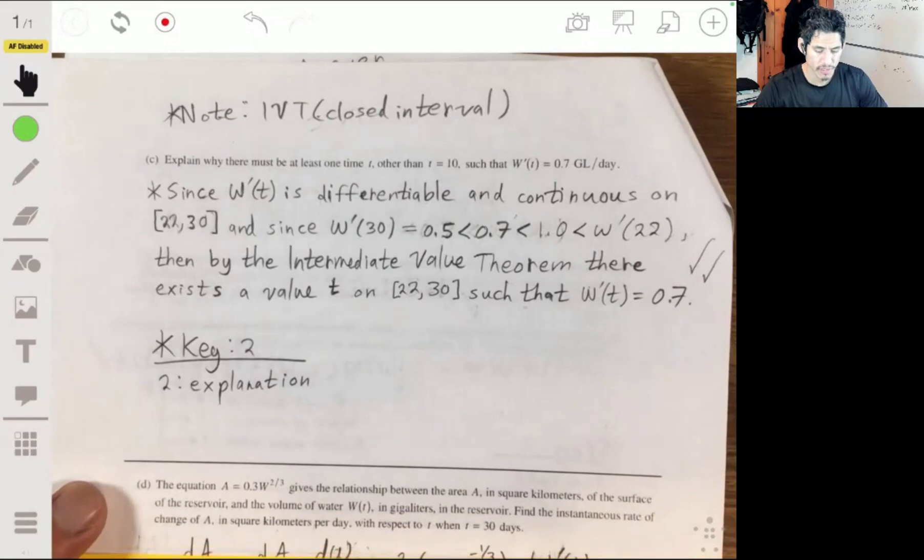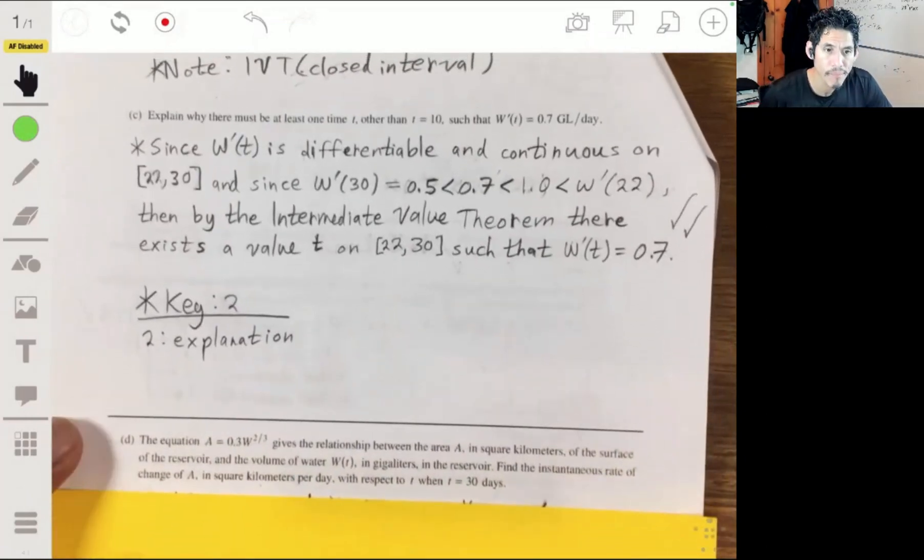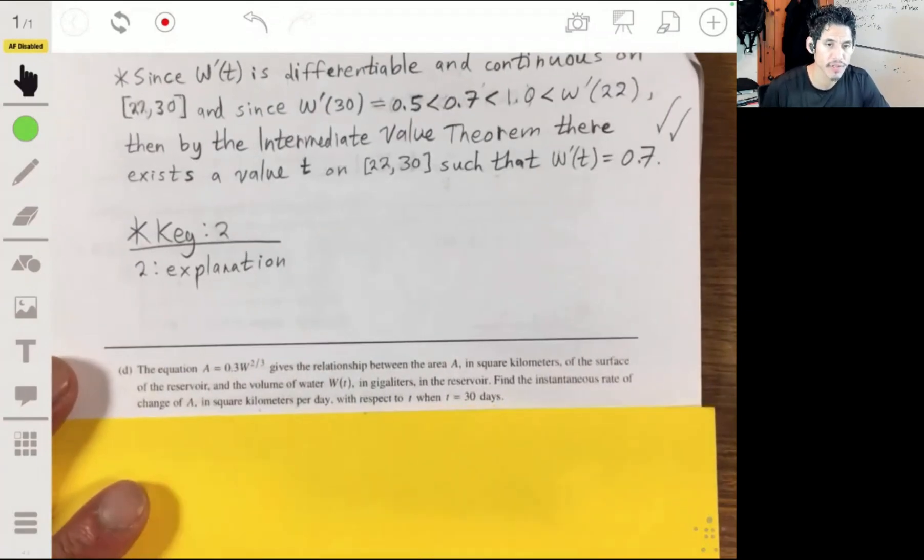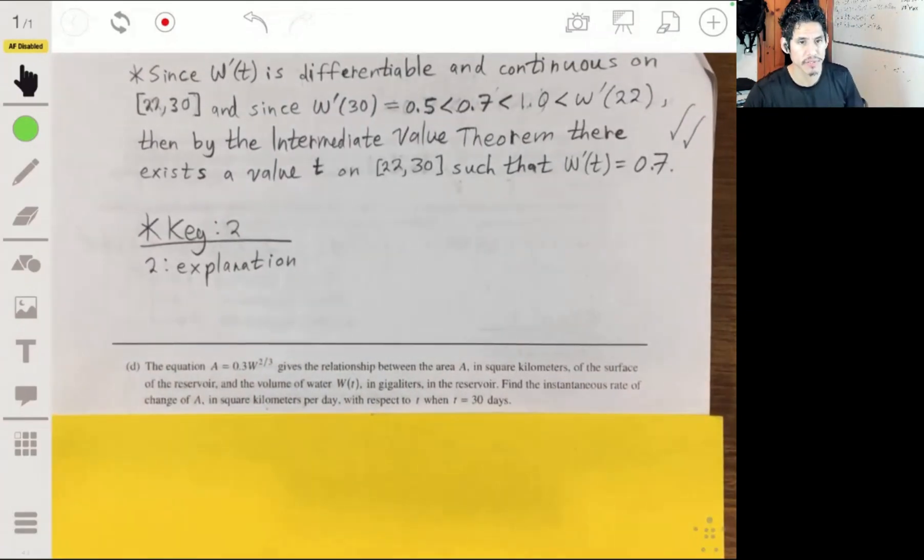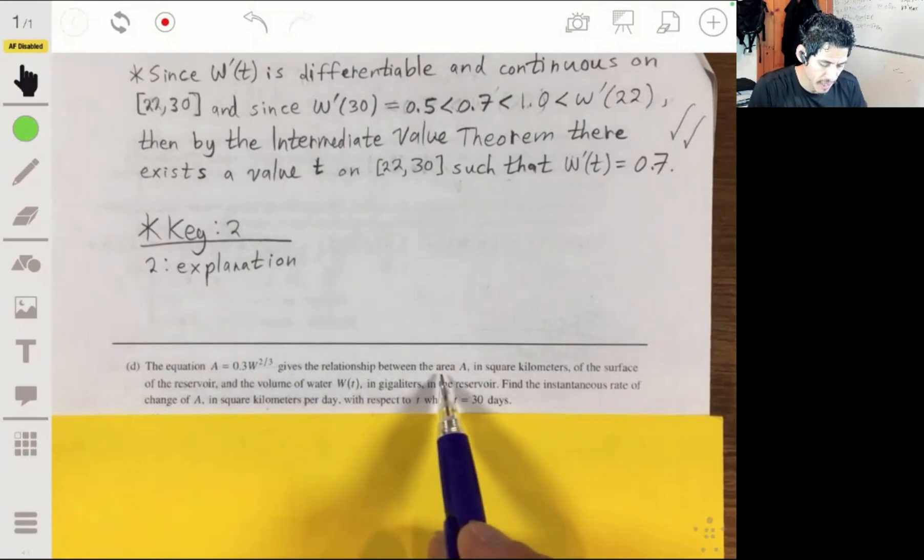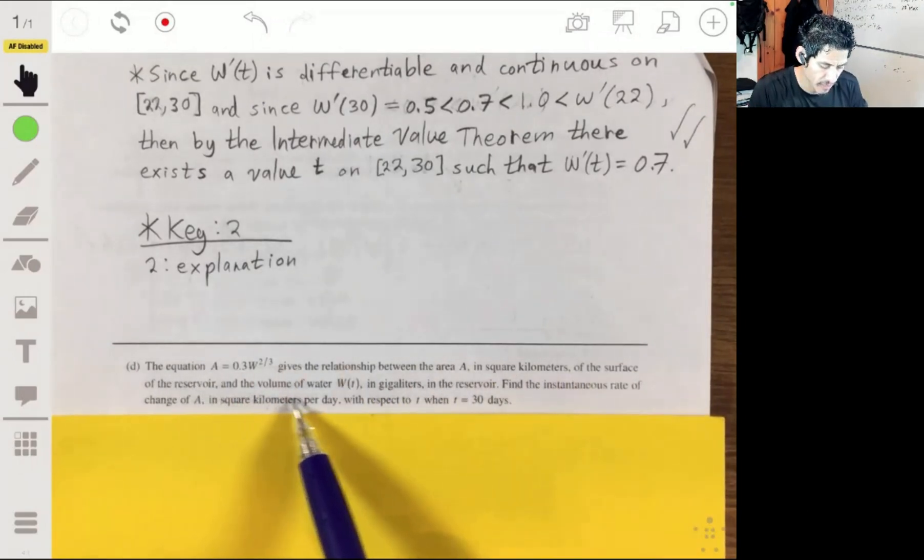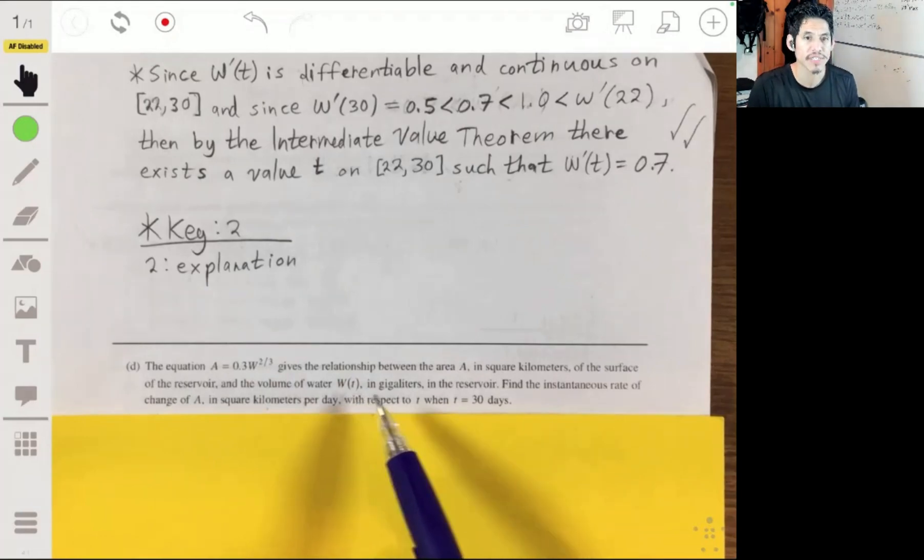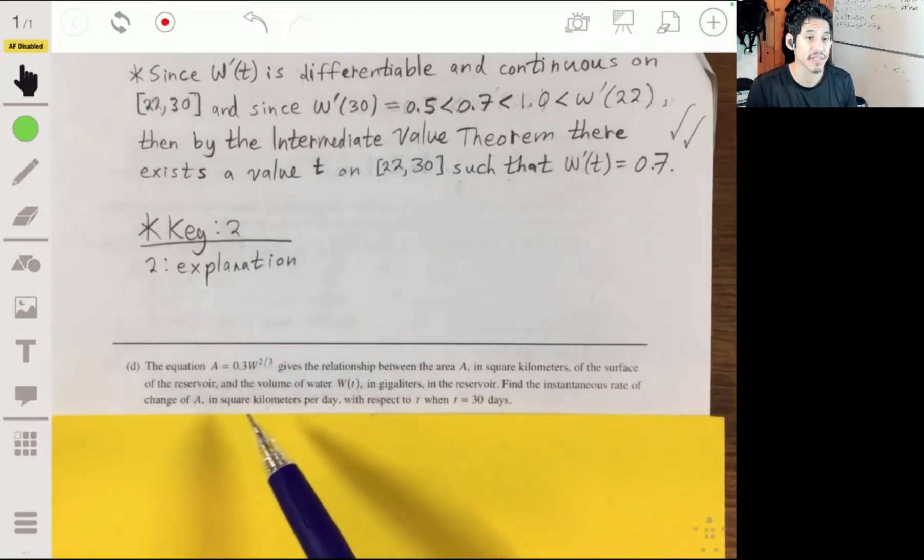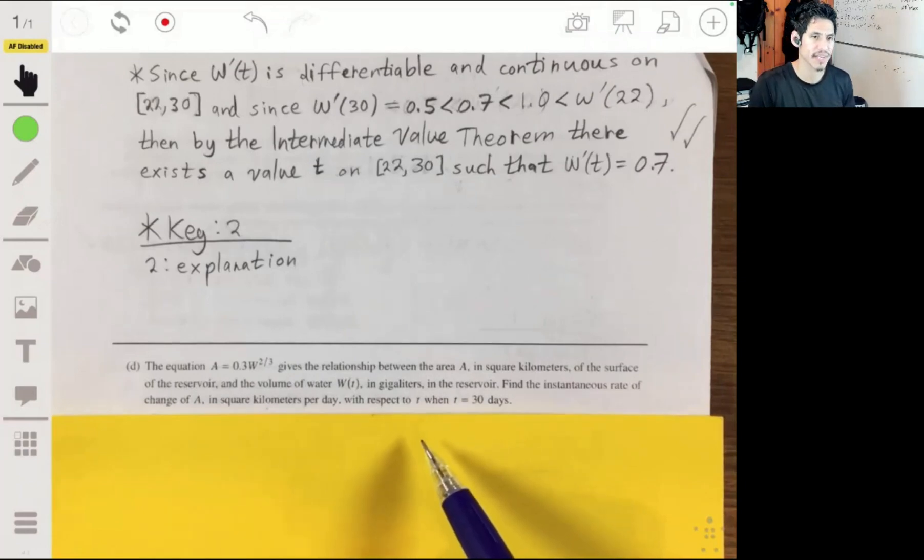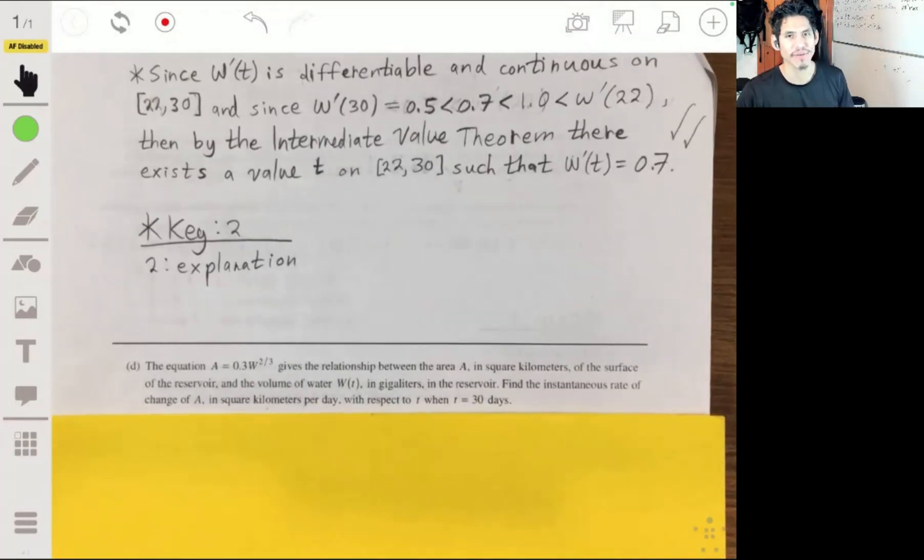All right, the last one. The equation a equals 0.3w to the two-thirds gives the relationship between the area a in square kilometers of the surface of the reservoir and the volume of water w of t in gigaliters in the reservoir. Find the instantaneous rate of change of a in square kilometers per day with respect to t when t equals 30 days.